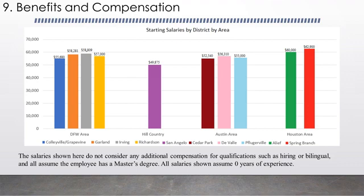The Hill Country paid the lowest — San Angelo ISD — with almost $50,000 a year. The Austin area was just a little lower than the DFW area, with its lowest being $52,540 a year and the highest being $56,000 a year. The Houston area did pay more than the DFW area, with its lowest being Alief at $60,000 a year, and Spring Branch paying almost $63,000 a year. What this graph illustrates is that there is a little over a $10,000 difference depending on the area in Texas where you work, though among the school districts I researched, compensation was generally pretty close.